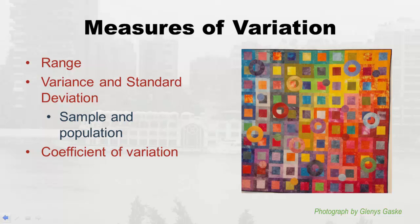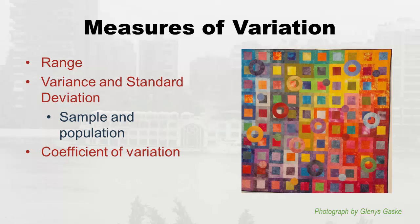I'm going to go through range first, then variance and standard deviation. I want to remind you about sample statistics versus population parameters — this plays in because the formulas are slightly different for sample variance and standard deviation versus population standard deviation. We'll go over those separate formulas. Finally, we'll talk about the coefficient of variation, or CV, after the others.